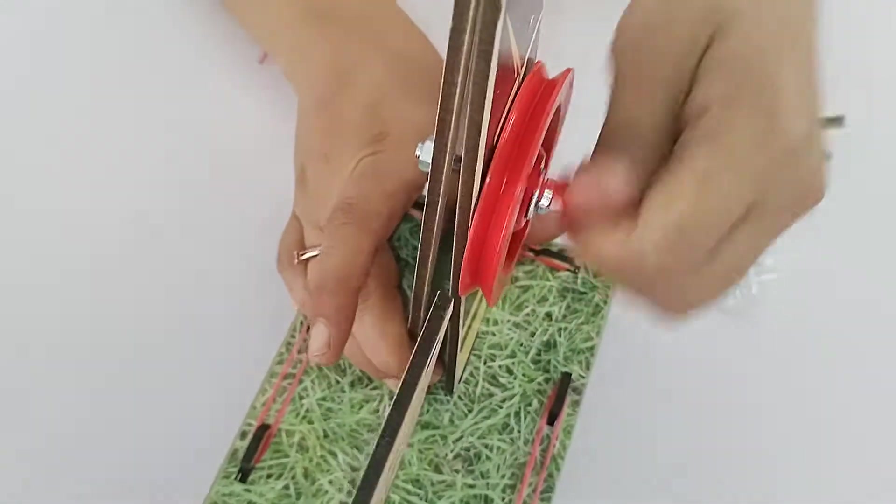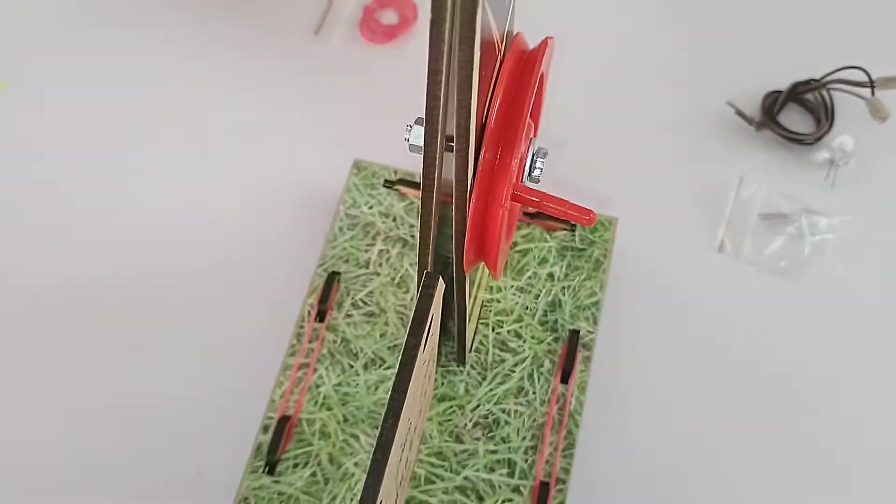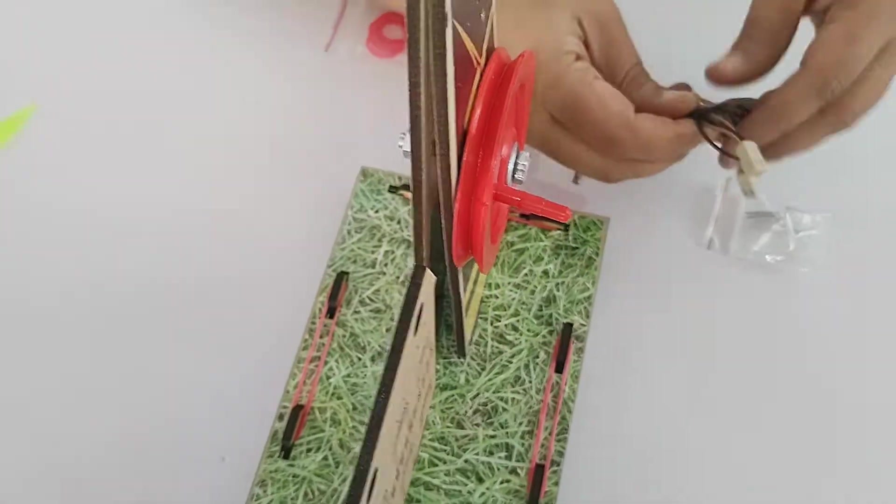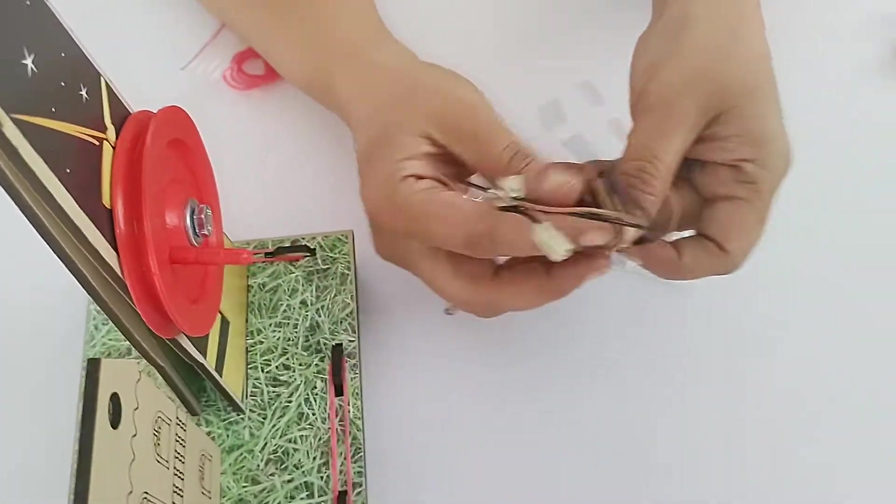So this is how this pulley will rotate with your hand. Fine. So now this connection is done. Now we will see how to do the connection for LEDs.